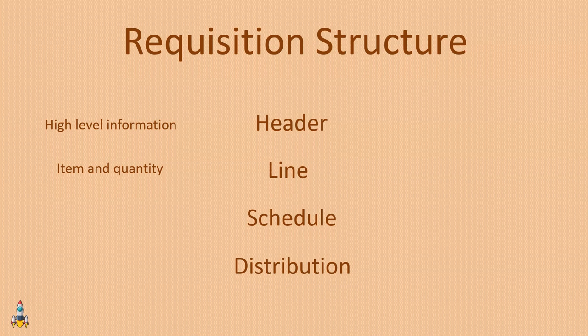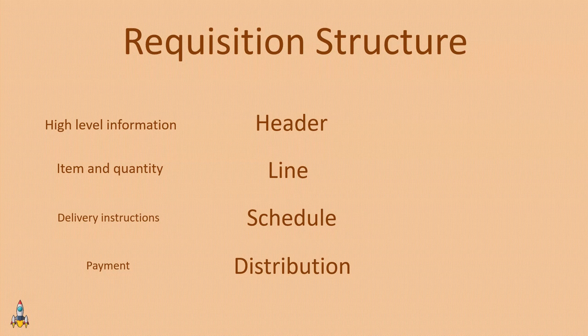After line, we have the schedule section, which contains the delivery instructions for your order. Schedule gives you information about when and where you want your order delivered — it will have the ship-to address, due date, and so on. The last section is the distribution section, which gives you information about payment — in short, it tells you how you are going to pay for your order. These are the four sections every requisition has in PeopleSoft.